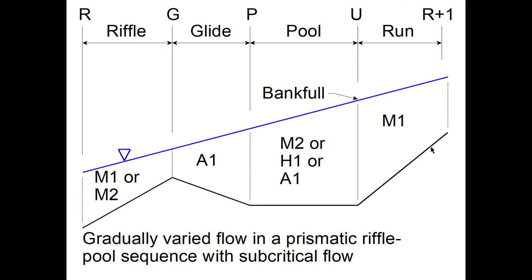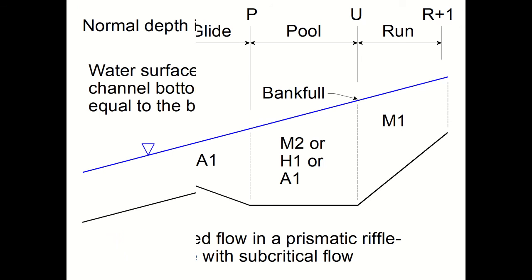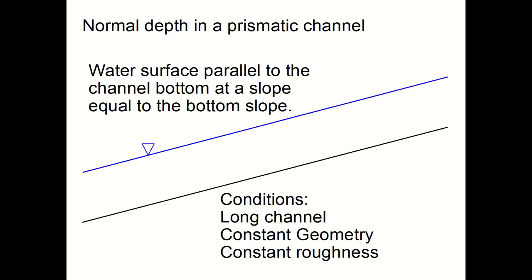Notice that in the entire sequence normal depth does not exist. If we talk about the normal depth in a prismatic channel, the water surface is parallel to the channel bottom at a slope equal to the bottom slope like we've done up to this point.